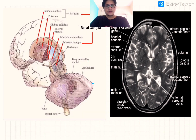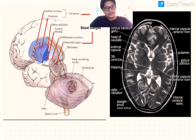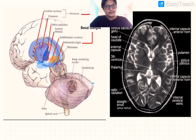Now in a sagittal view, this portion is the putamen, these are the globus pallidus internus and externus, this is the caudate nucleus, and somewhere below we have the amygdaloid body. These are your subthalamic nuclei, and over here we have the substantia nigra, and here we have the thalamus.